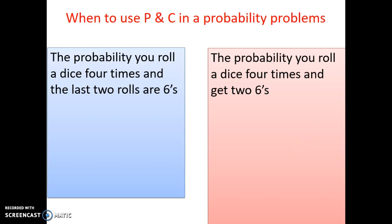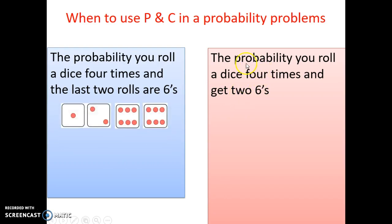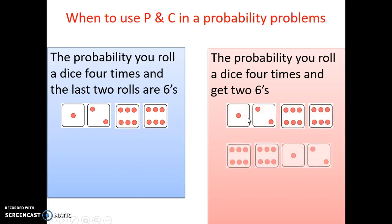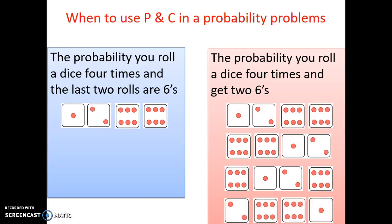So when do you use permutations and combinations in an actual probability problem? Here's an example: the probability you roll a dice four times and the last two rolls are sixes. I've told you the exact order of how everything happens. When you know this, you don't need to worry about permutations and combinations. However, this example is different: the probability that you roll a dice four times and get two sixes - you don't know exactly when the sixes occurred. They could happen at the end, they could be your first two rolls, the first and last, or the two middle rolls.